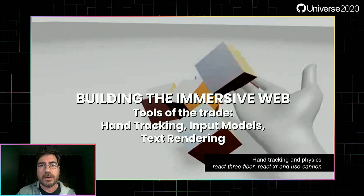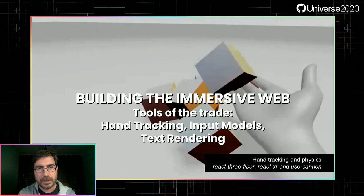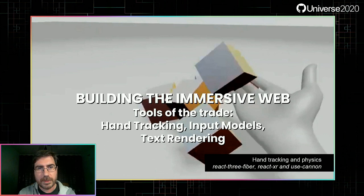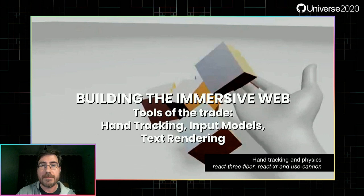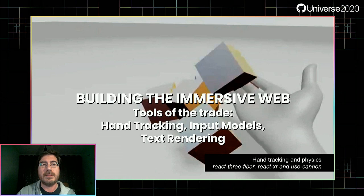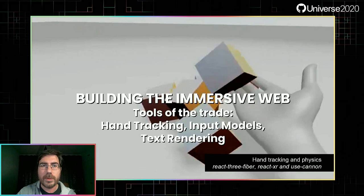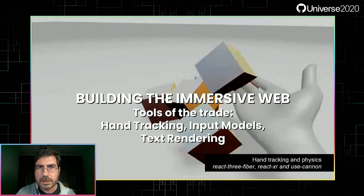Other things to consider: hand tracking, a recent development in Oculus Quest with a module behind a flag — no hardware needed, the system recognizes hands and fingers to interact with the scene, providing joint poses while leaving actual hand rendering to the experience. Input models — there's a repository of controller models via CDN so you can draw them accurately, improving immersion instead of showing a generic box. And text rendering — it would be ideal to have something like CSS and DOM; the upcoming layers module will help with this, but you'll need support for fonts, layout, and crisp rendering.